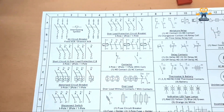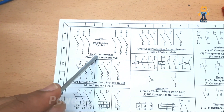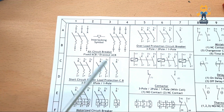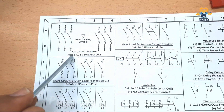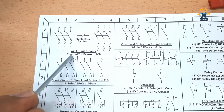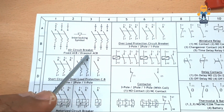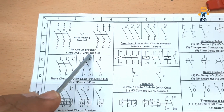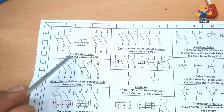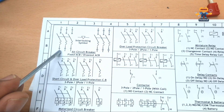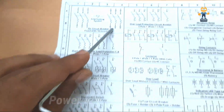Starting from here, we have the air circuit breaker — fixed ACB and draw-out ACB. The fixed ACB is fixed in the panel and we are not able to remove it. In the draw-out type, there is a lever we can rotate and the ACB comes out from the rack — this is called rack-in and rack-out. This symbol shows fixed and this symbol shows draw-out.